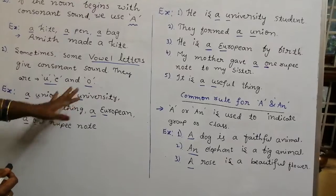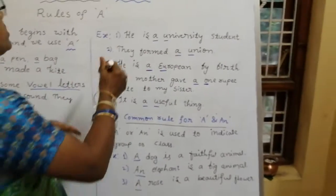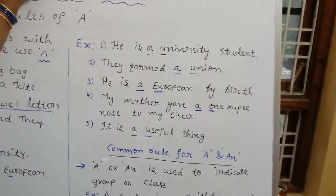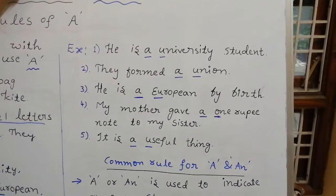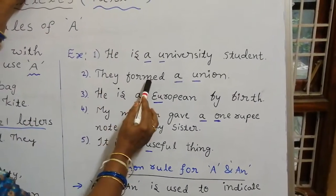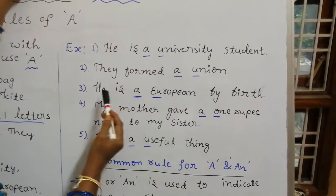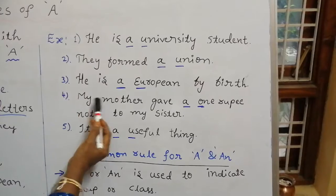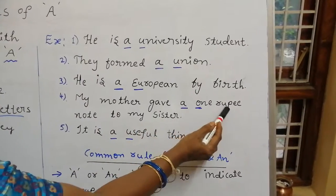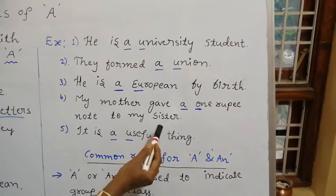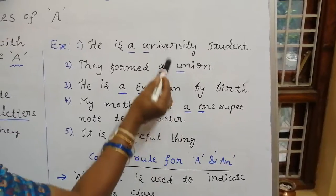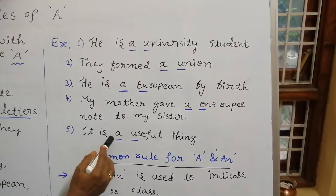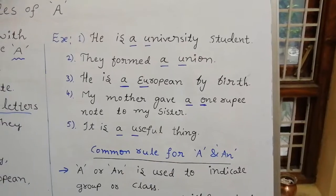Using all these words, I gave some examples. He is a university student — not 'an university student.' They formed a union. He is a European by birth. My mother gave a one rupee note to my sister. It is a useful thing.